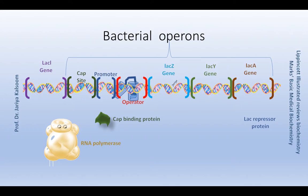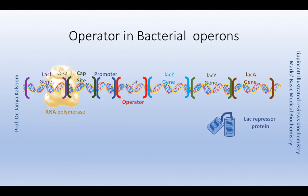Bacterial operons contain a segment of DNA called the operator. A repressor protein can bind reversibly with the operator. When this protein is not bound to the operator, RNA polymerase can bind the promoter, which is again a DNA sequence. Then the RNA polymerase may slide past the operator sequence and start transcription of the genes into messenger RNA.